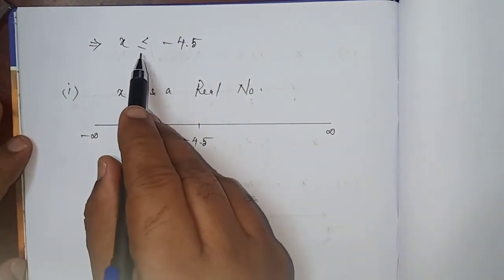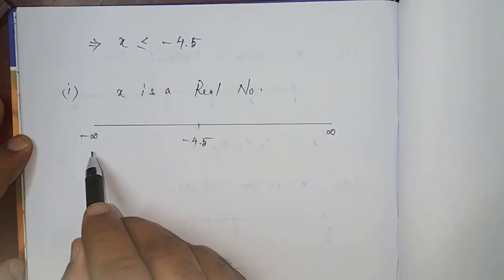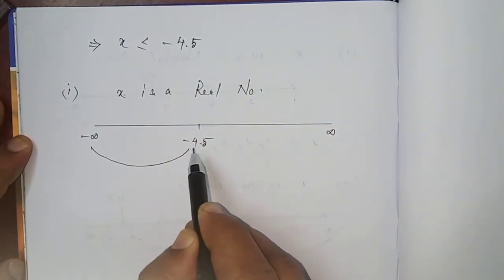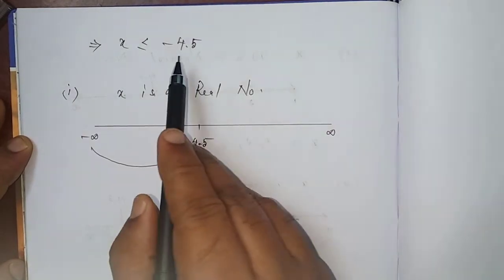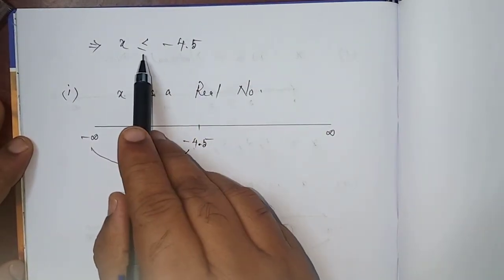Right? Less than or equal to, given. So, minus infinity to -4.5 including -4.5 because you are given less than or equal to.